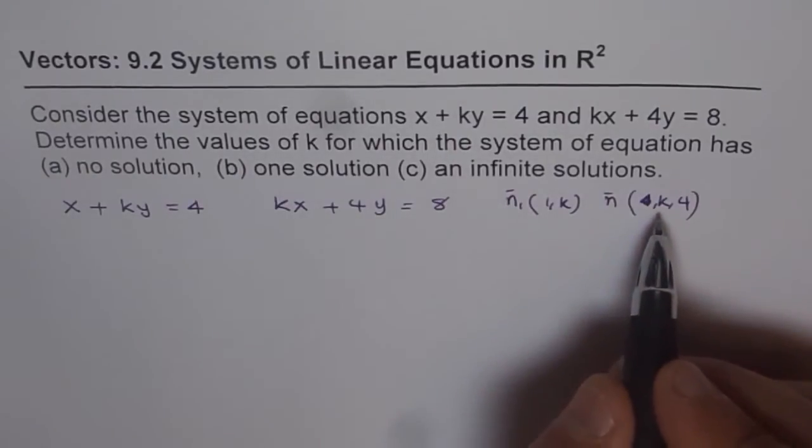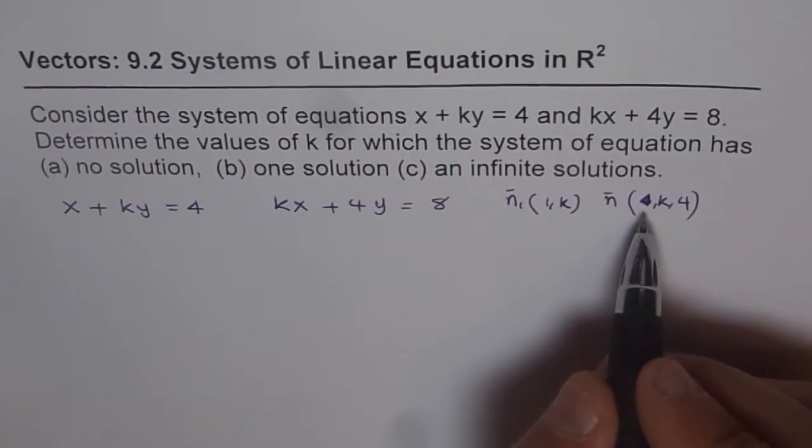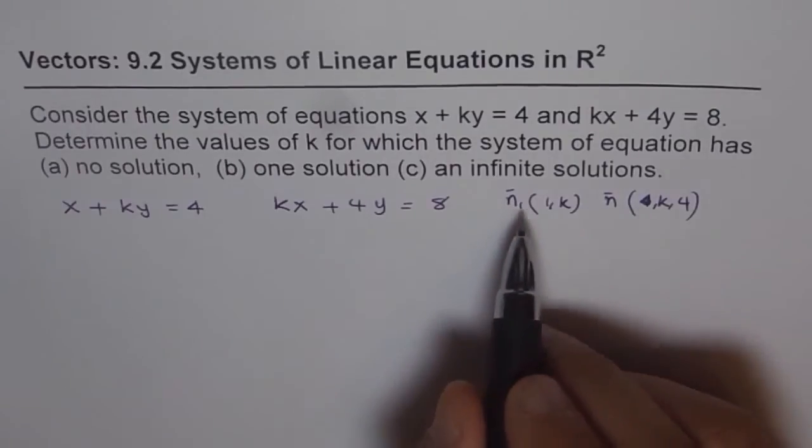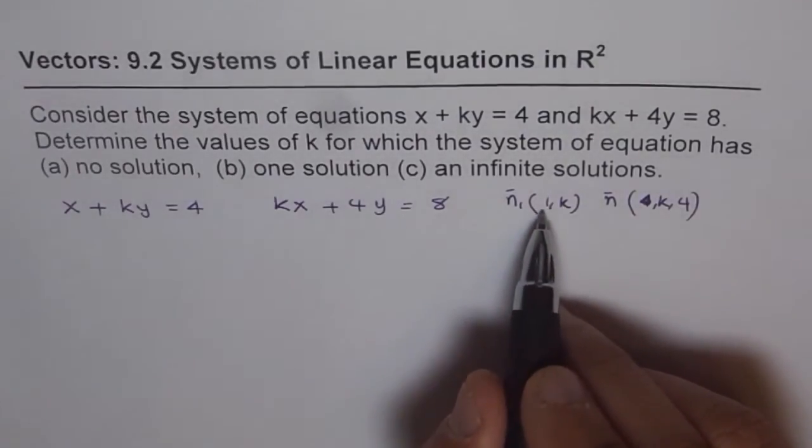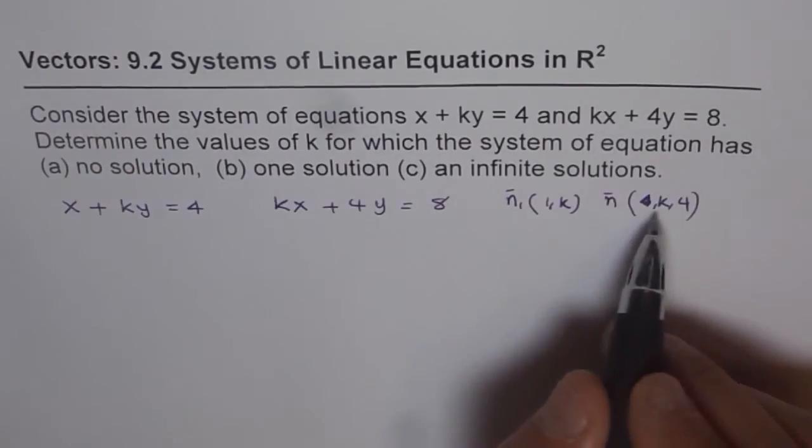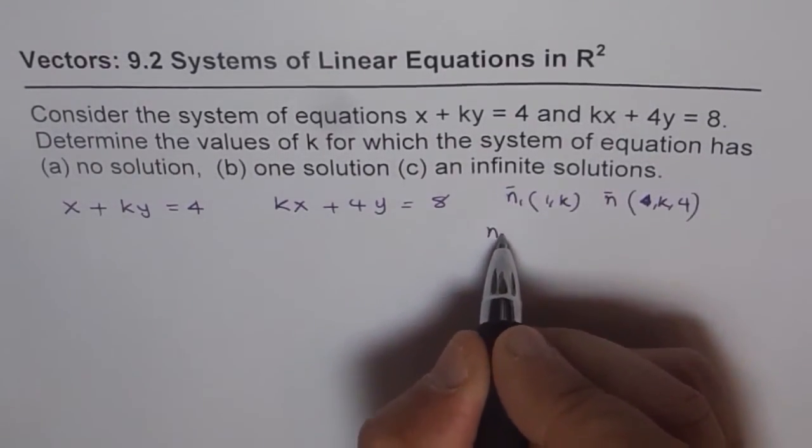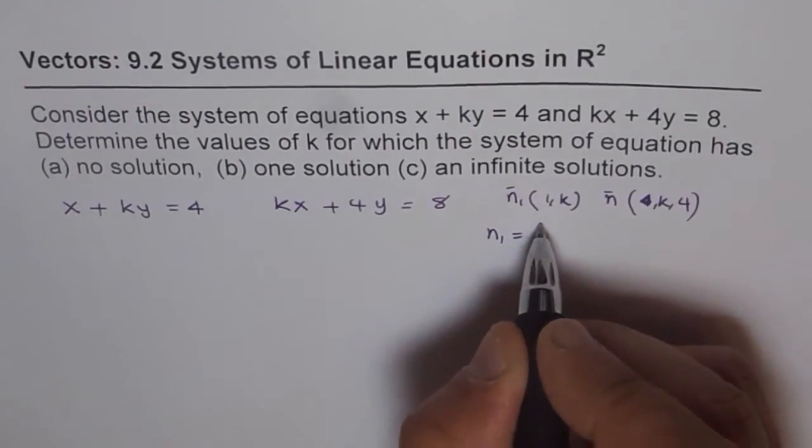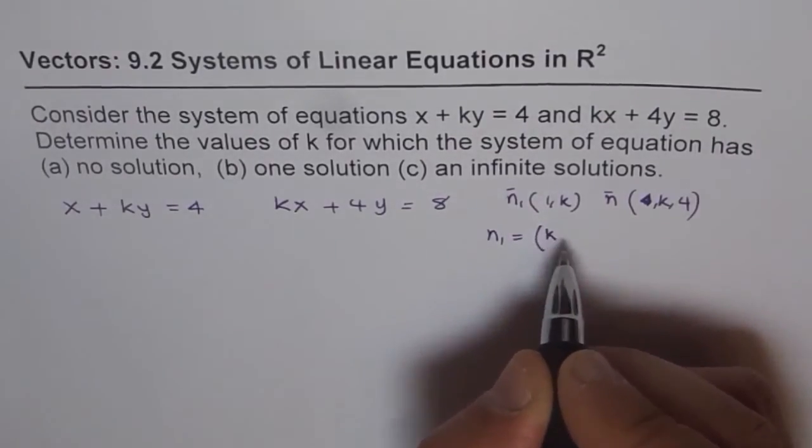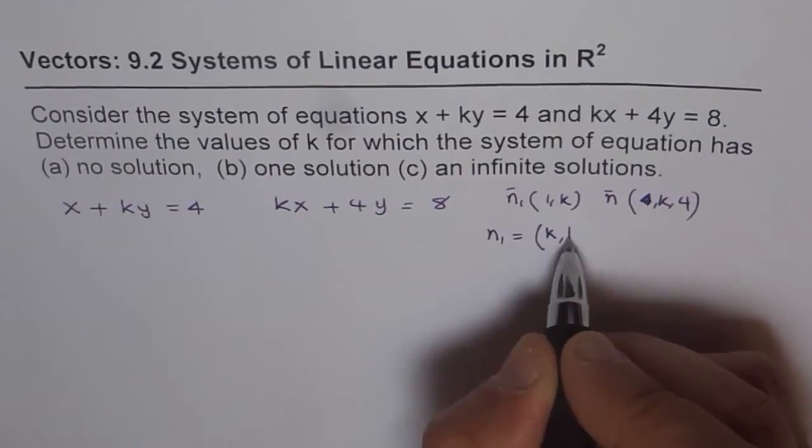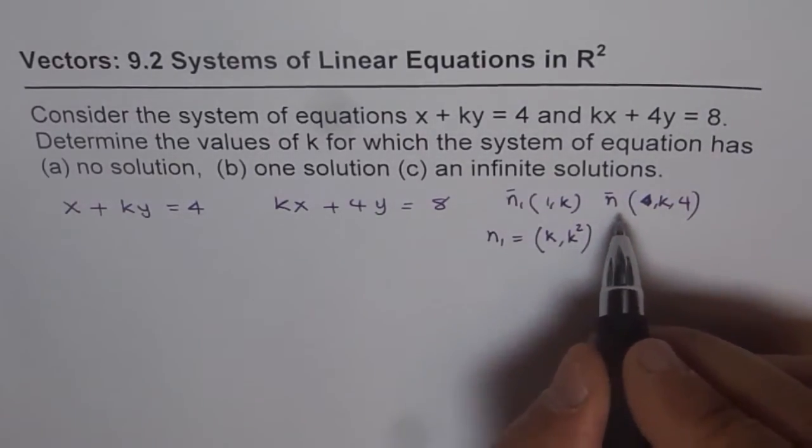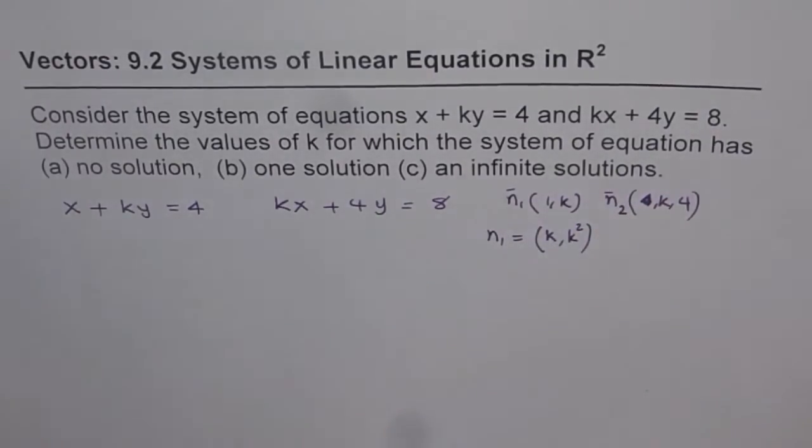If I want to make them same, what should I do? I can multiply this by scalar multiple k and make them same. So I can write n₁ as, if I multiply by k, I get (k, k²). And this is n₂ for me. Now for these to be same, because we want them to be parallel, they can be parallel if their normals are same.